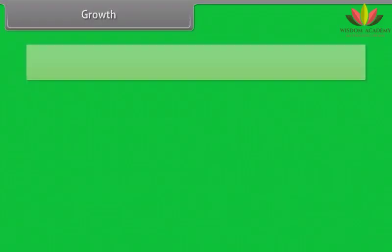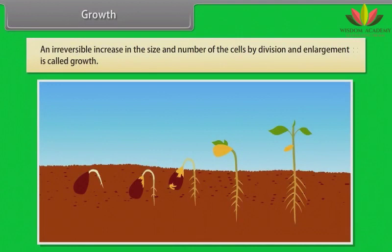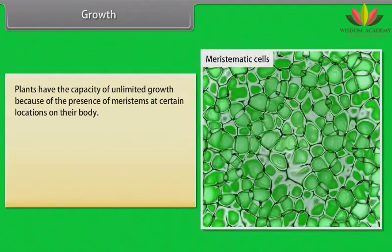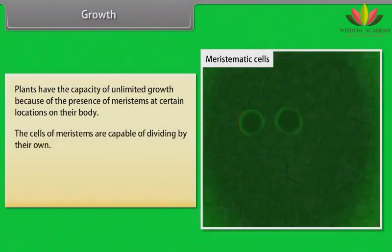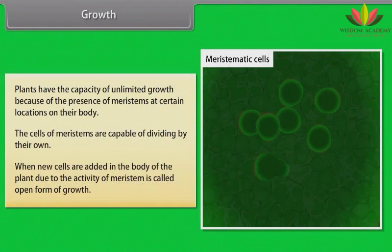An irreversible increase in the size and number of cells by division and enlargement is called growth. In plants, the growth generally is indeterminate. Plants have the capacity of unlimited growth because of the presence of meristems at certain locations on their body. The cells of meristems are capable of dividing by their own. When new cells are added in the body of the plant due to the activity of meristem, it is called open form of growth.